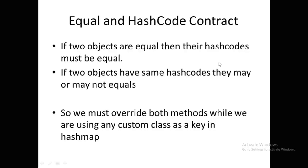Let's get started. The equals and hashCode contract states: if two objects are equal then their hashCode must be equal. So if you have a custom class and you have overridden the equals method, if equals returns true for two objects then the hashCode function should return the same value. The other way around: if two objects have the same hashCode, they may or may not be equal. We must override both methods when using a custom class as a key in a HashMap.